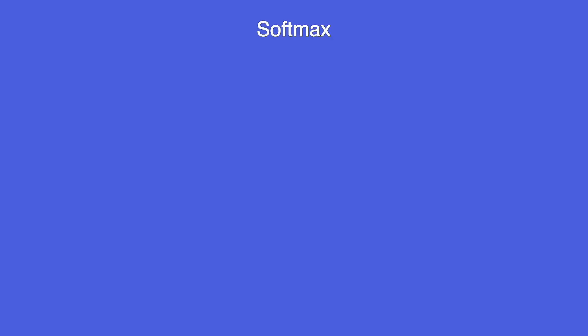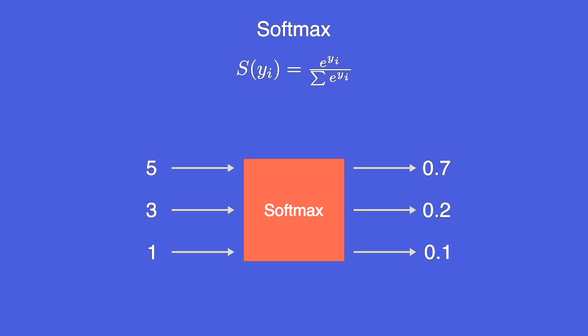And the last function I want to show you is the softmax function. The softmax squashes the input numbers to output numbers between 0 and 1 so that you will get a probability value at the end. So the higher the raw input number the higher will be the probability value. This is usually used in the last layer in multi-class classification problems. After applying the softmax in the end you then decide for the class with the highest probability.